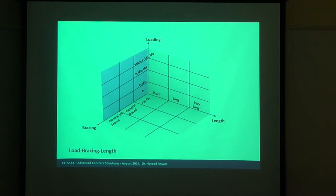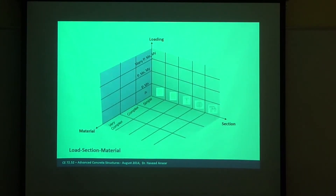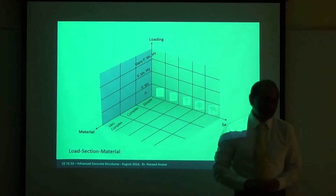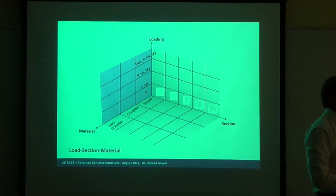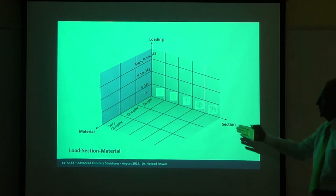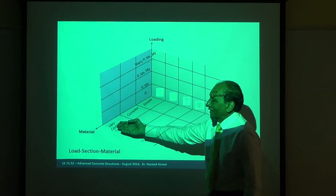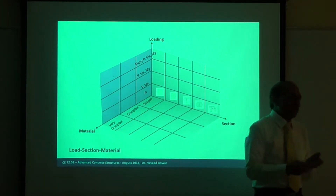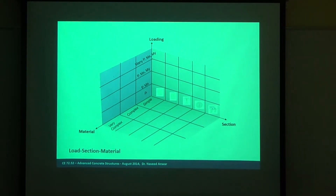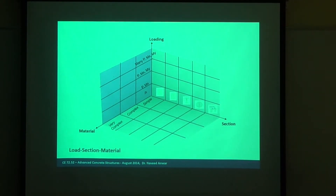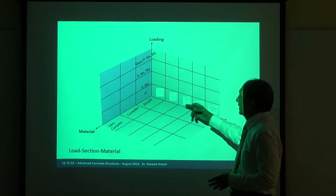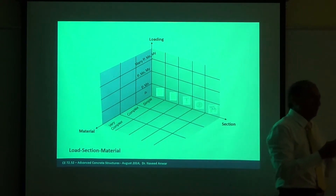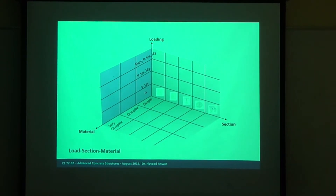The third complexity space is between section, material, and loading. Material can be simple, complex, or very complex — it could be composite, partly confined, partly unconfined, steel, concrete, or different materials combined. So basically we have section shape, section material, loading, length, and framing all interacting.